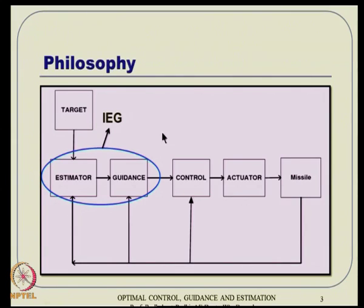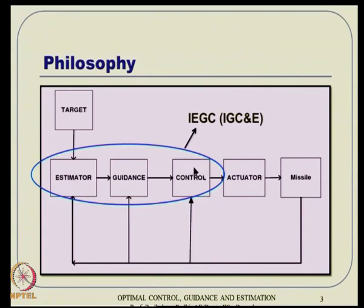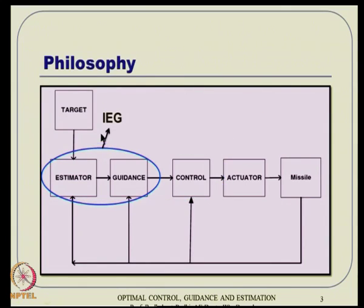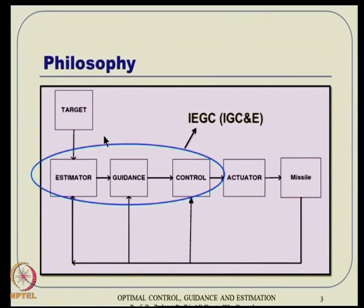The philosophy is: typically you have guidance and control separately, but if you put estimator and guidance together, that leads to integrated estimation and guidance. If you also include control, it becomes integrated estimation, guidance, and control — sometimes called IGC and E. We will talk about both IG and IGC in this lecture, giving an overview of our approach.